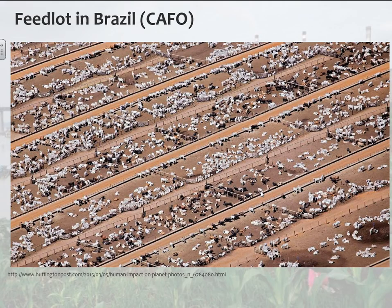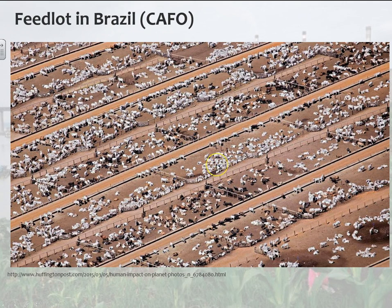This is a feedlot in Brazil. These are all cows — in unnaturally close proximity. There's not even any grass around here, it's all dirt. Cows normally graze on grass. This is an example of a CAFO.